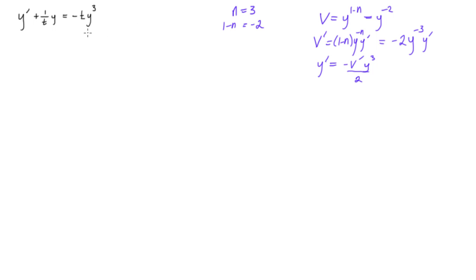Okay, so remember the first thing we do is we divide every term by y to the n. So in this case, it's y to the 3. So we can go like this, we can write y to the minus 3 times y prime plus y to the minus 3 times 1 over t times y is equal to y to the minus 3 times minus t times y to the 3.